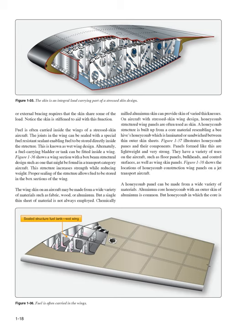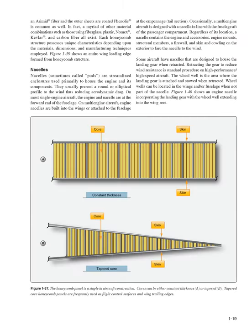A honeycomb panel can be made from a wide variety of materials. Aluminum core honeycomb with an outer skin of aluminum is common, but honeycomb in which the core is an aramid fiber and the outer sheets are coated phenolic is common as well. A myriad of other material combinations — such as those using fiberglass, plastic, Nomex, Kevlar, and carbon fiber — all exist. Each honeycomb structure possesses unique characteristics depending upon the materials, dimensions, and manufacturing techniques employed. An entire wing leading edge can be formed from honeycomb structure.